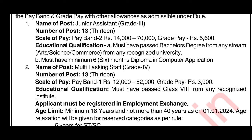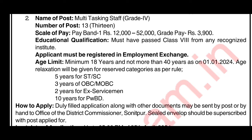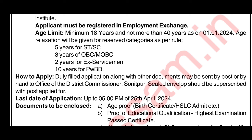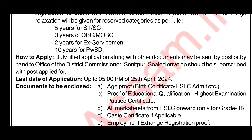The standard form of application as published in the Assam Gazette is available at the DC Office and SP Office. You can also get it through stationary printing, Xerox, or by searching online. The standard form of application is the most important document; you can also visit the District Commissioner's office directly to get it.